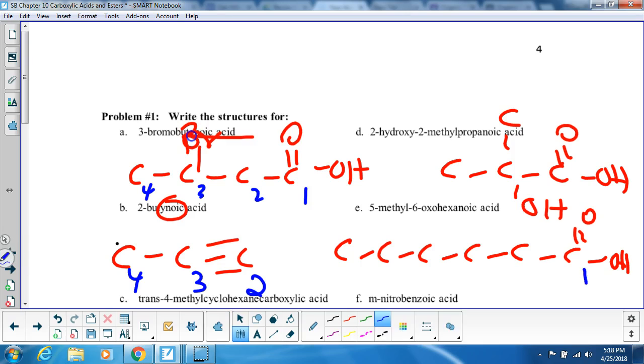So over here are my C double bond OOH, let me number this again, 1, 2, 3, 4, 5, 6, and what do I have? I have a methyl off of 5 and then I have those 6-oxo,